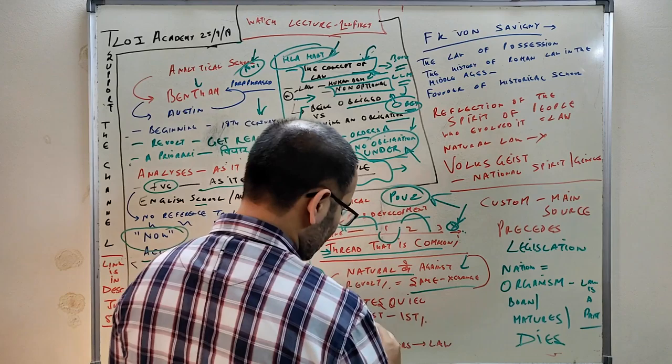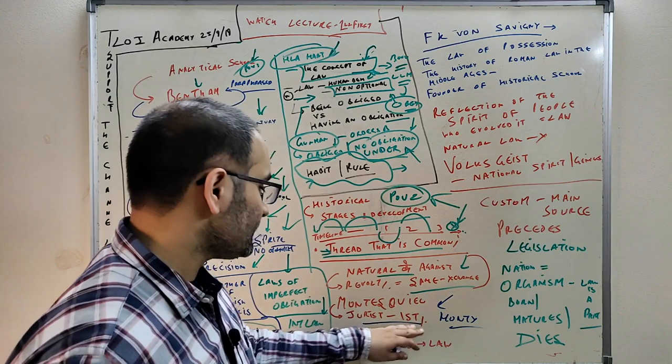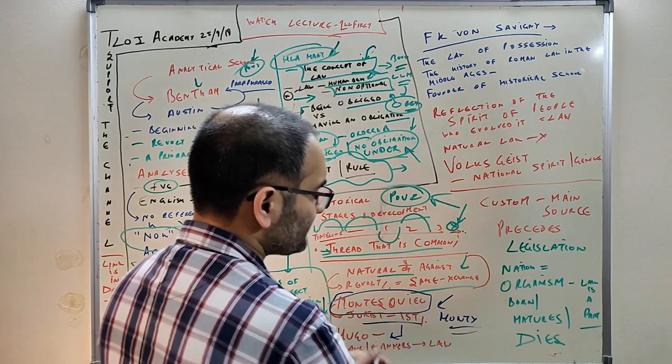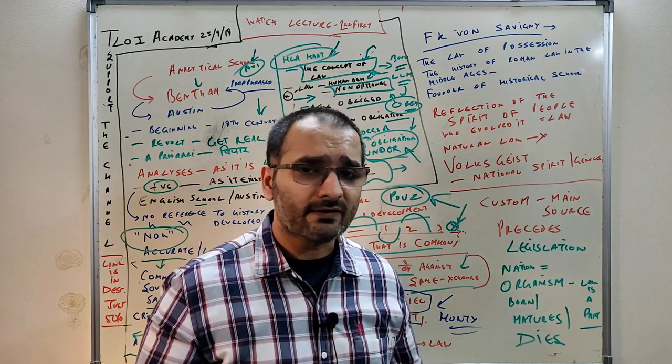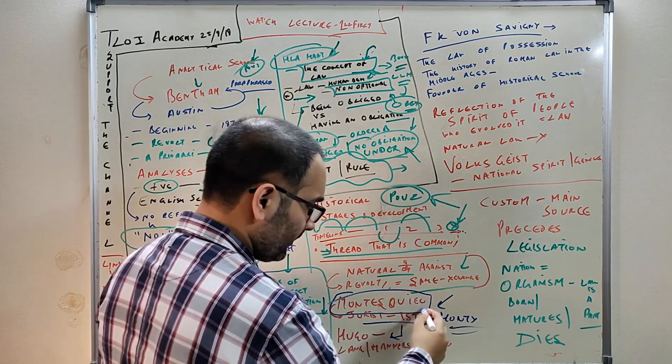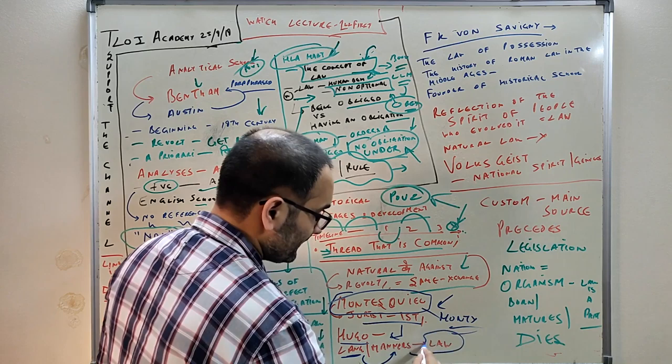Montesquieu was the first jurist - remember this spelling. Then there was Mr. Hugo who were trying to find out the history of law. Where did it come from? When the state didn't even exist, what was law? What is happening here? Austin said law has command, sovereign, sanction - that's it. But the historical school asks, where did this statute come from? Where did this command originate? Hugo was concerned with how language and manners of the people have developed law in that region.